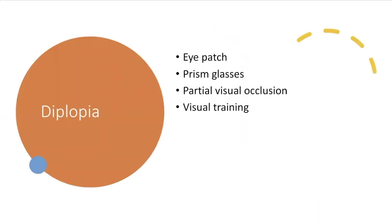For diplopia, we use an eye patch to cover one eye to decrease double vision, and prism glasses, which function as an eye patch on the nasal area. It also includes partial visual occlusion, such as applying a strip of oblique materials like surgical tape, and we do visual training to improve their vision.